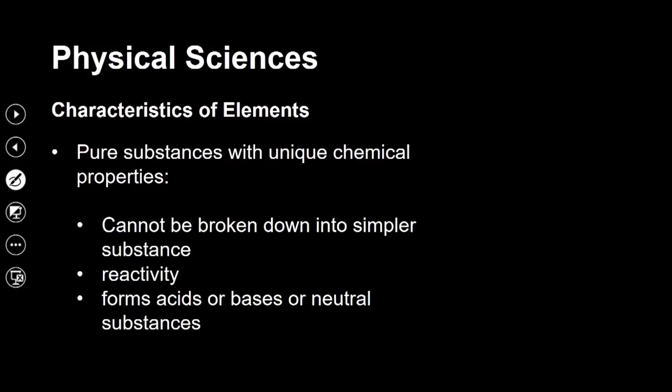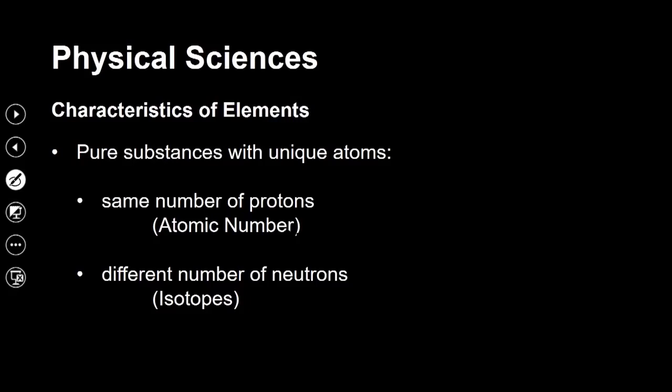Pure substances with unique chemical properties — in terms of elements — cannot be broken down into simpler substances. The smallest unit making up an element is an atom, and all atoms of a specific element are of the same kind. We can also talk about reactivity: how easily elements react with other substances in a chemical change, and whether they form acids, bases, or neutral substances.